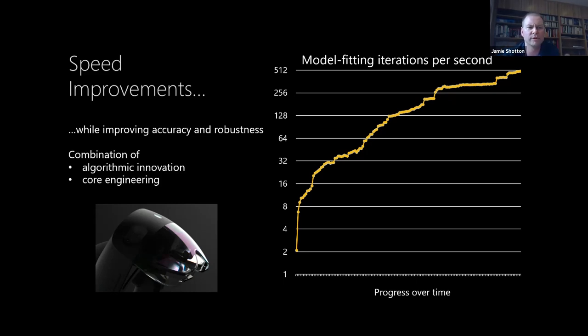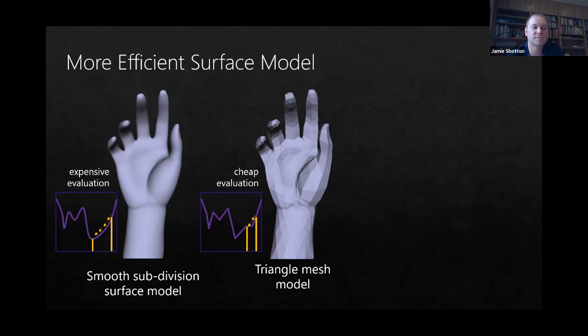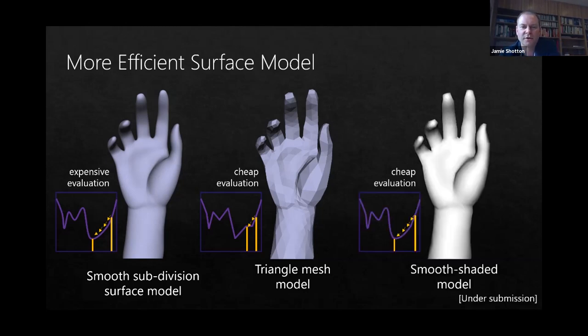So as a couple of examples, we had been using this smooth subdivision surface model, which was great for the energy landscape, but very expensive to evaluate in our energy terms. And compared to that triangle mesh, we had much better convergence. But the triangle mesh is cheaper to evaluate. But we worked out that you could get effectively the best of both worlds by taking a smooth shading approximation and interpolating the normals in a manner very similar to Phong shading and graphics. And that gave us the cheap evaluation and most of the smooth energy landscape and kept things ticking along very nicely.